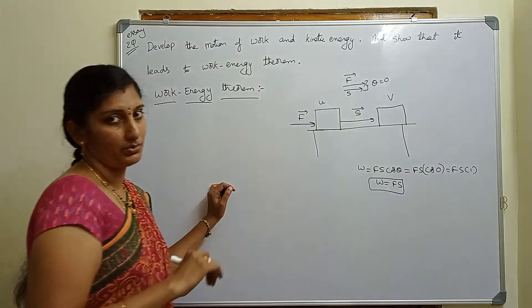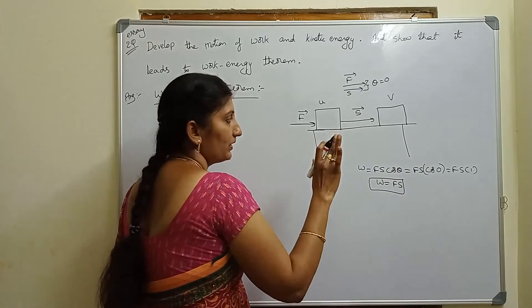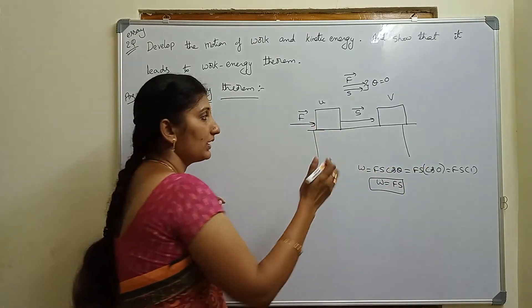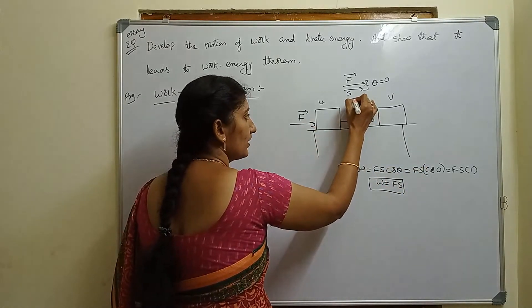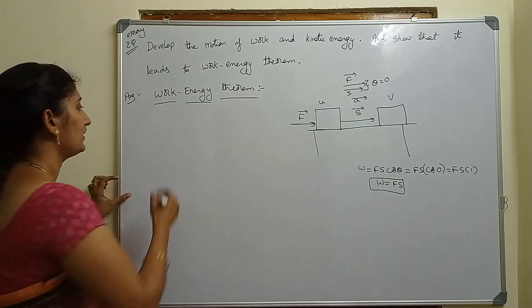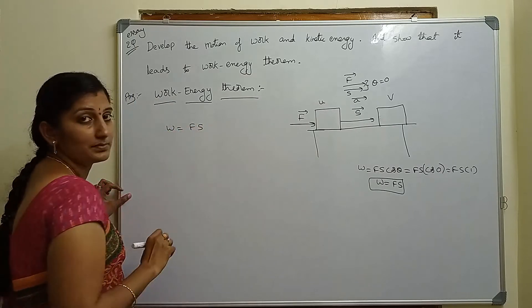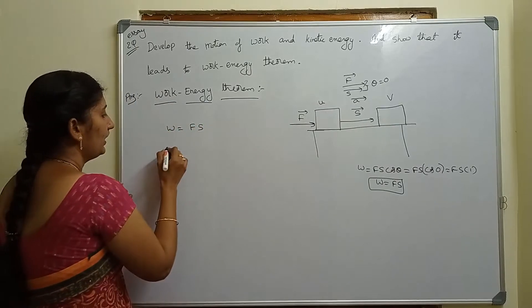When force is applied, the initial velocity is u. The final velocity is V. The body will accelerate with acceleration a. So we will use the formula work equals force into displacement.